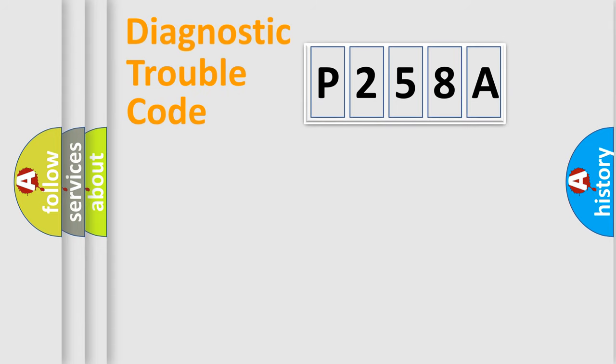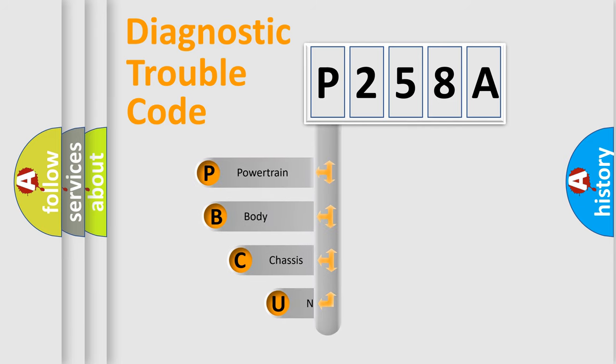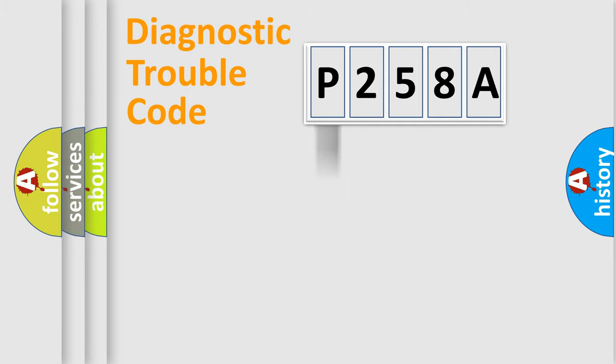First, let's look at the history of diagnostic fault code composition according to the OBD2 protocol, which is unified for all automakers since 2000. We divide the electric system of an automobile into four basic units: Powertrain, Body, Chassis, and Network.